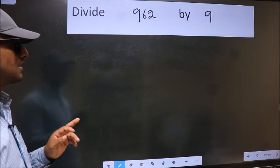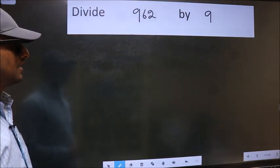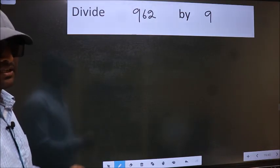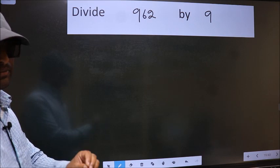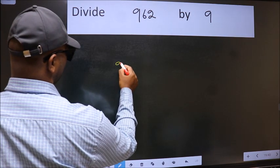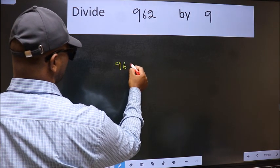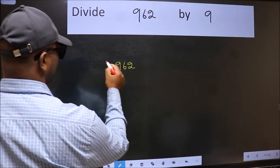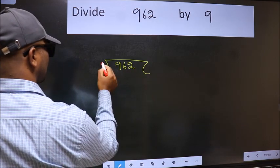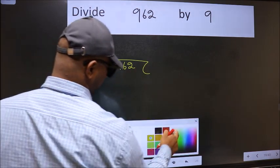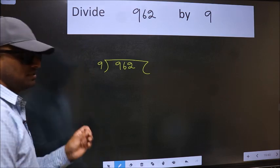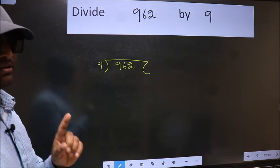Divide 962 by 9. To do this division we should frame it in this way: 962 here and 9 here. This is your step 1.